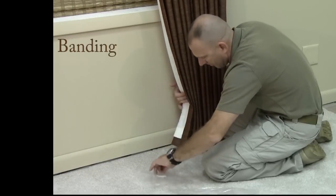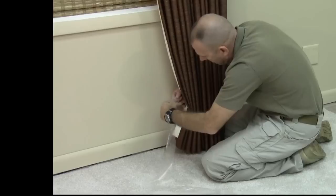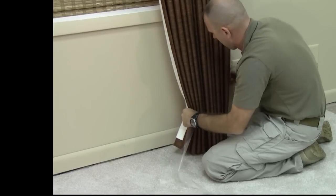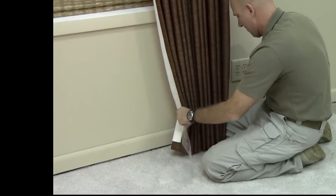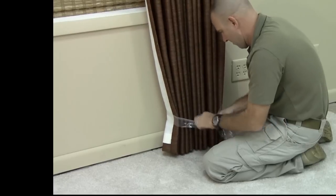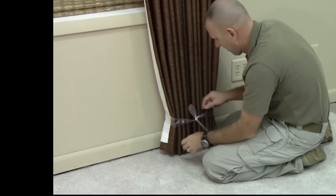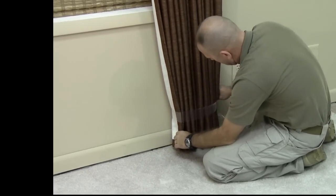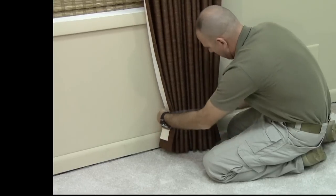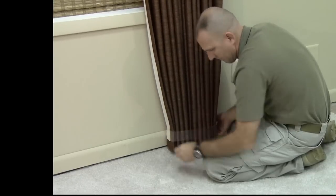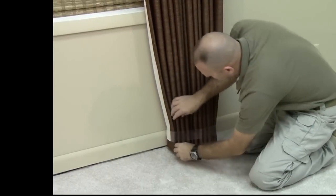Once you have created equal folds along the pleat line for the entire panel, use these bands to tie and secure the folds of the panel. Make sure the band is flat and the knot is behind the drapery. Take care not to squeeze the folds.